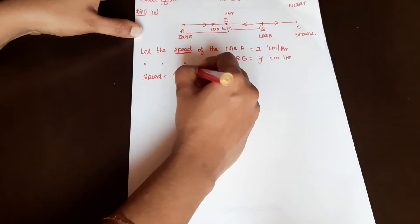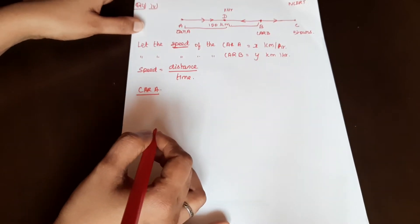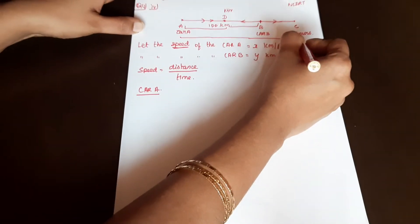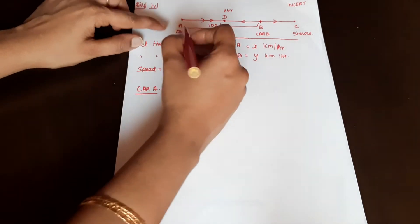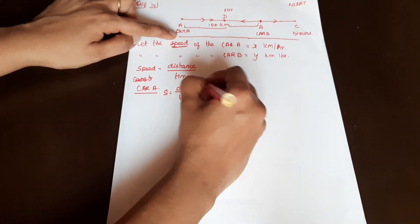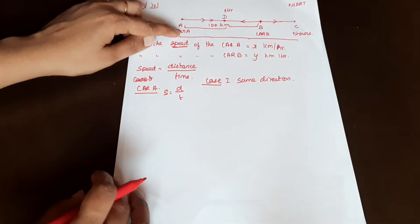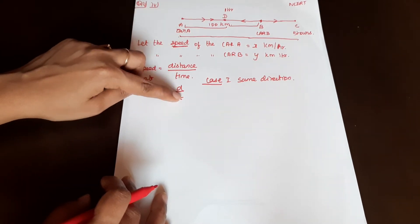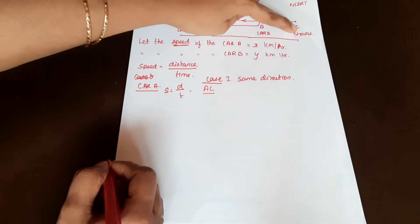Speed equals Distance by Time. For Case 1 — same direction — Car A travels distance AC and Car B travels distance BC. The time taken is 5 hours.